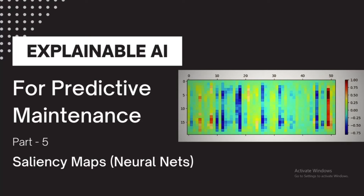Hello everyone and welcome back to my channel. This is going to be the last video of this video series on explainable AI for predictive maintenance. In this video we are going to talk about saliency maps, also known as gradient-based feature activation. These are specific to neural networks but you can apply them to any neural network.